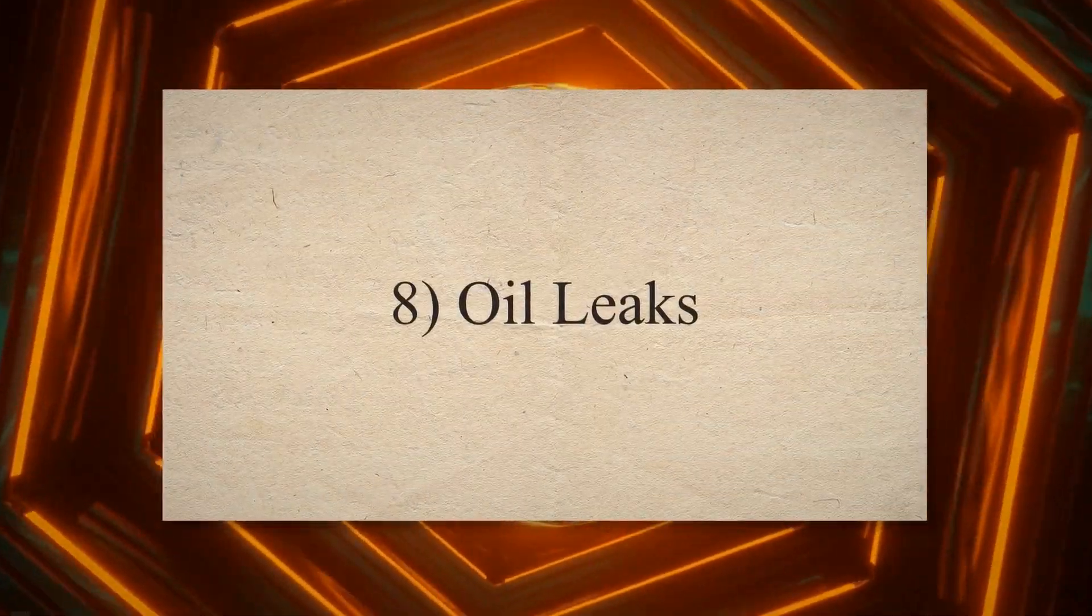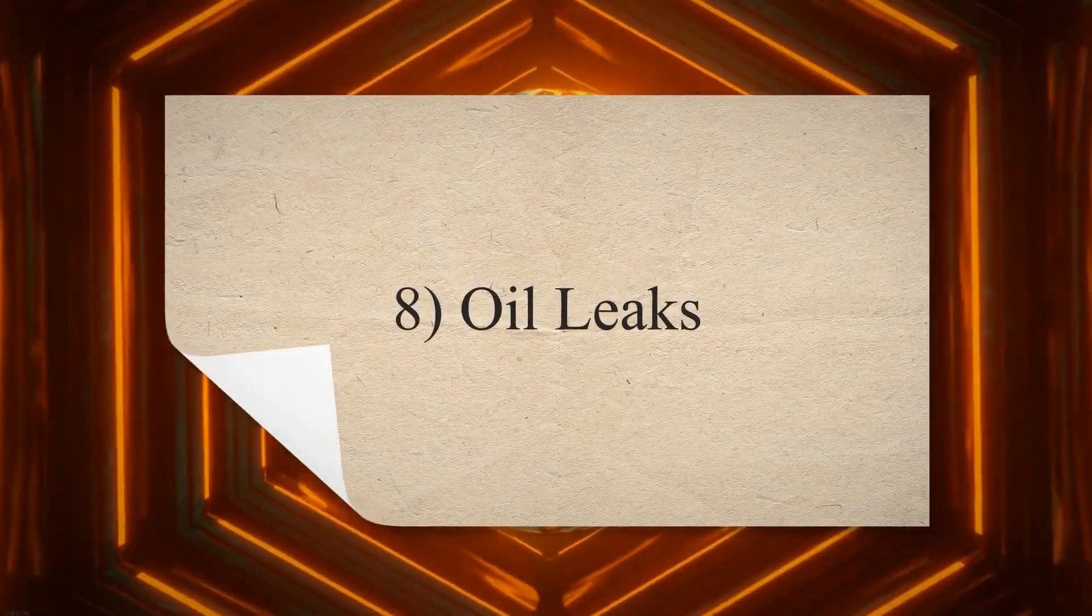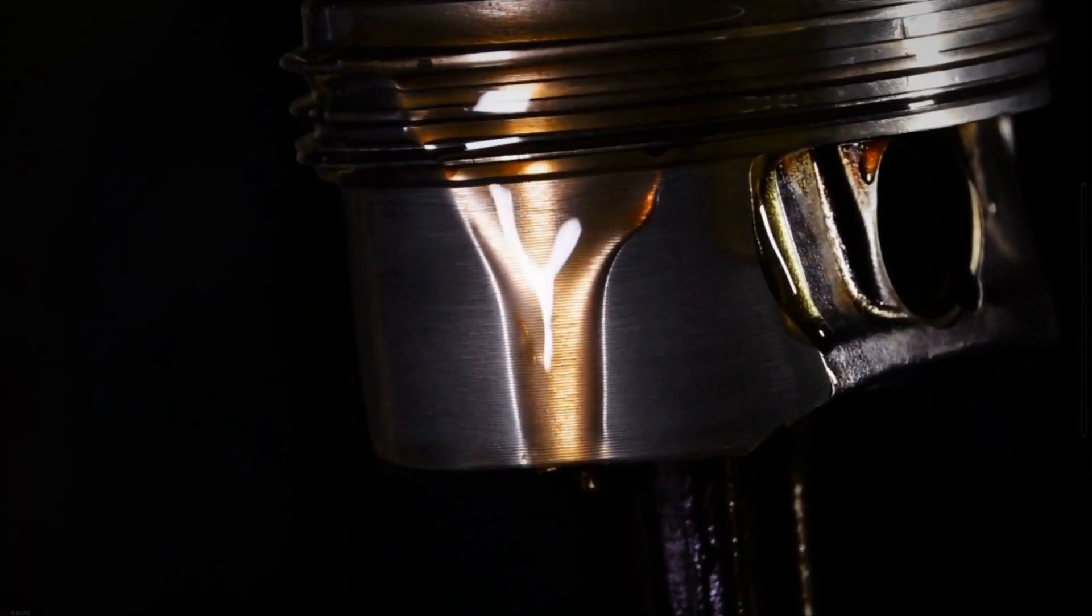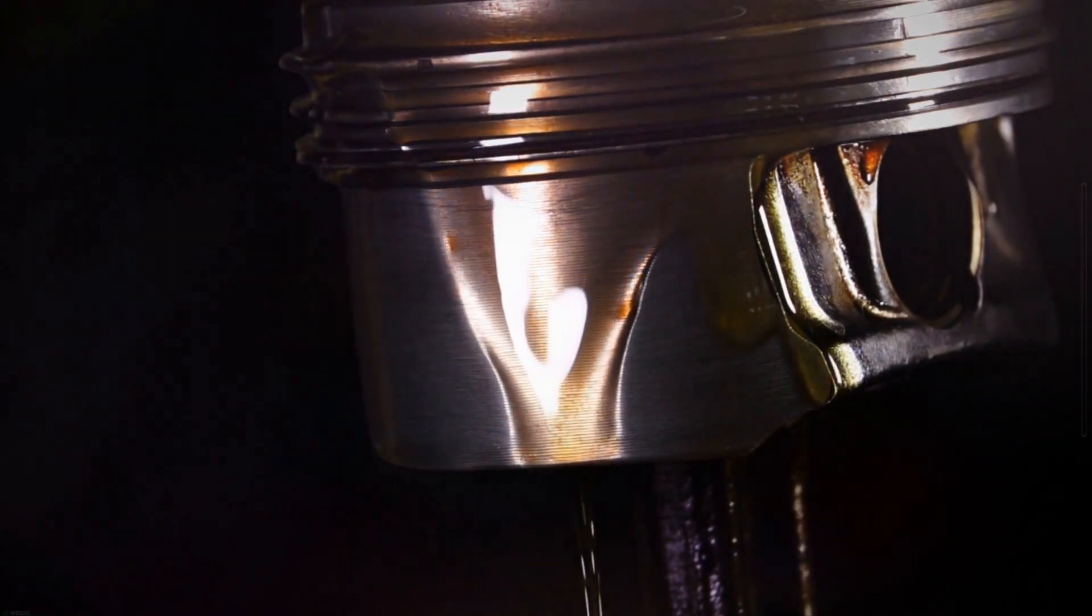8. Oil leaks. Faulty piston rings can also lead to increased pressure within the crankcase, causing engine seals to go bad and leak oil.